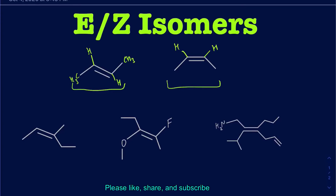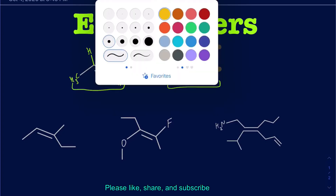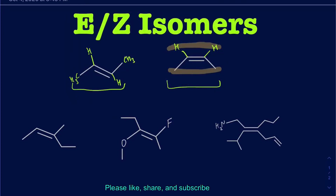The difference between the two structures is that in the second structure your methyl groups are on the same side and your hydrogens are on the same side, but in the first structure they were on opposite sides — the methyl groups are anti to one another, or opposite to one another.